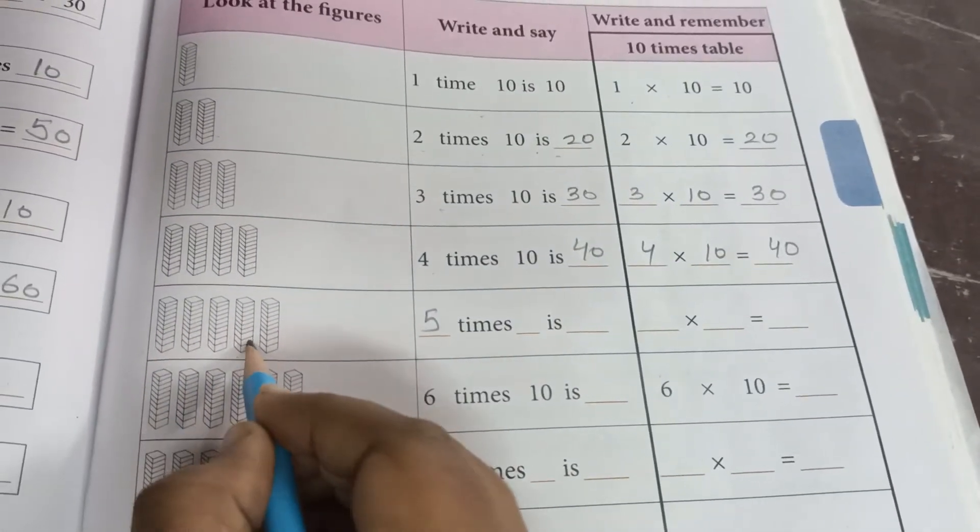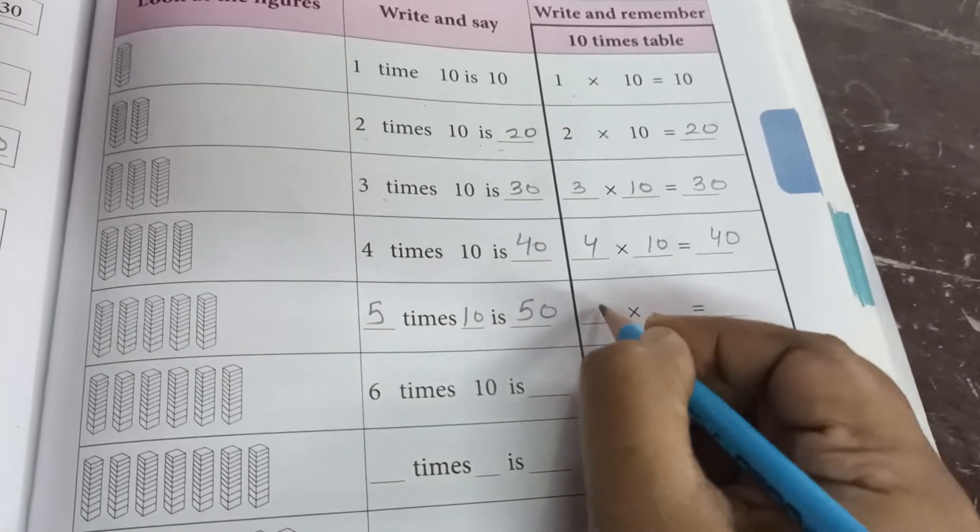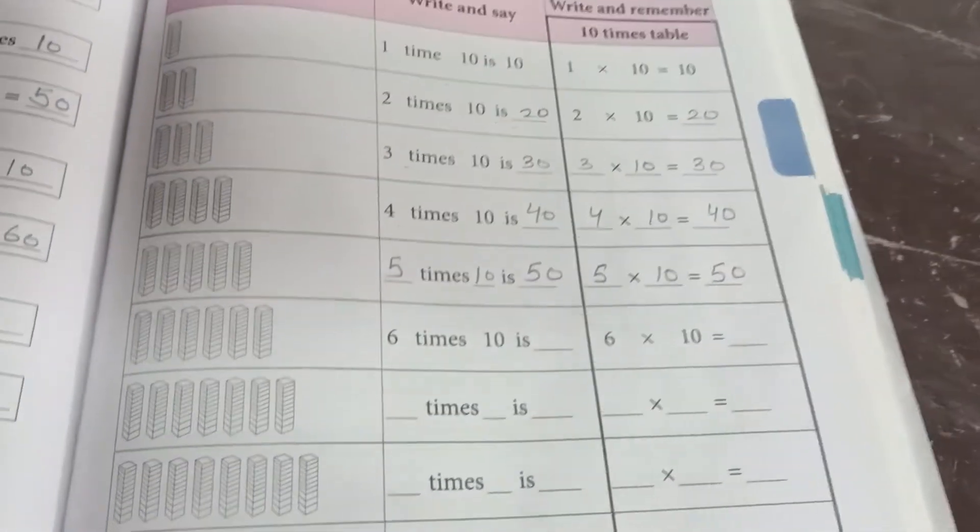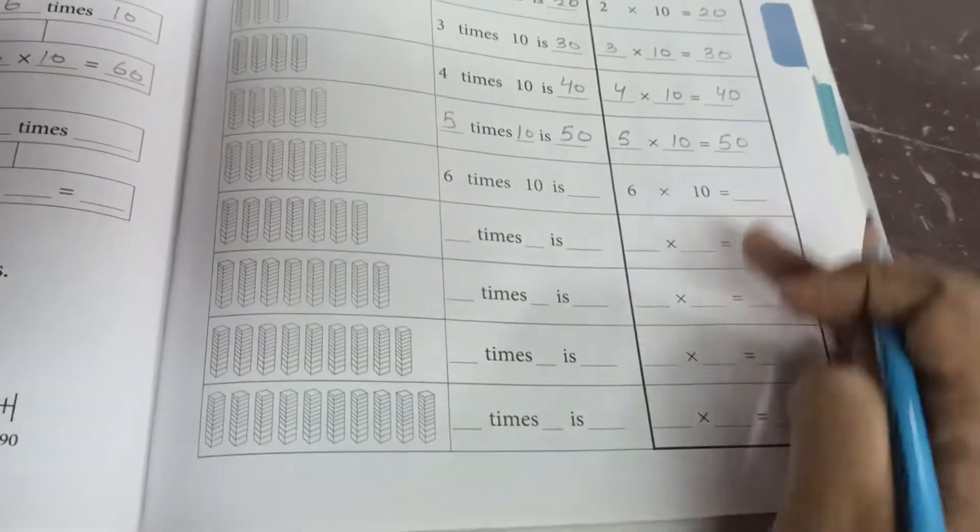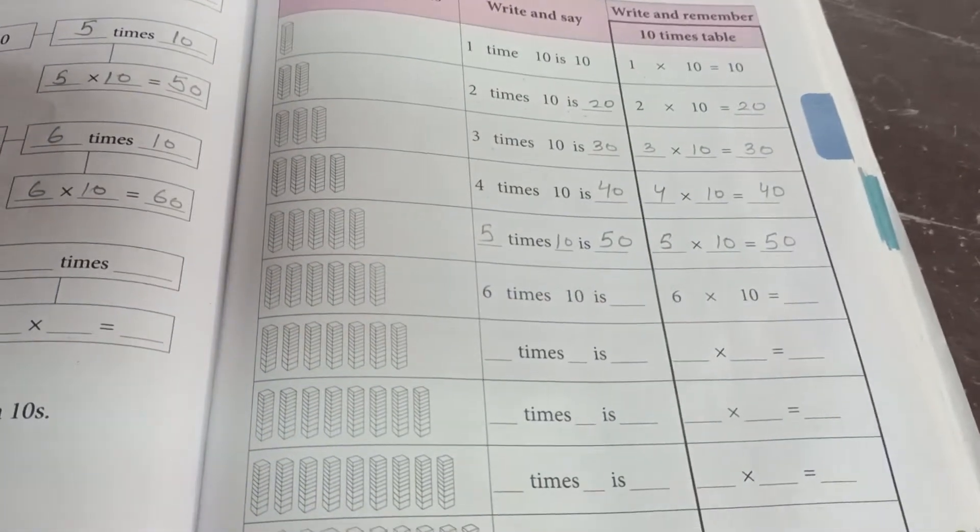Now 5 times 10. So 5, see 1, 2, 3, 4, 5. 5 times 10 is 50. Means 5 multiplied by 10, the answer will be 50. So the remaining blanks you have to do it with your own.